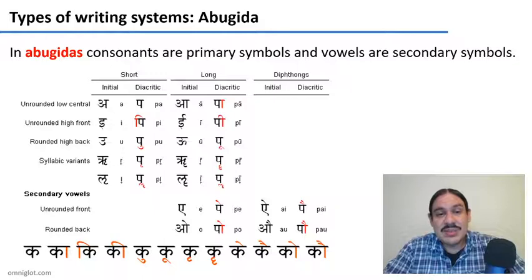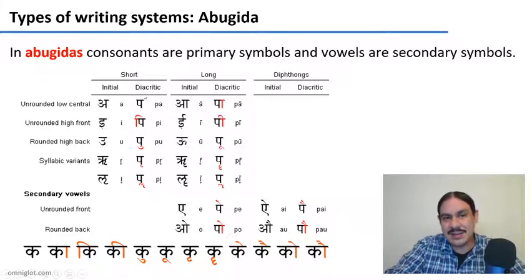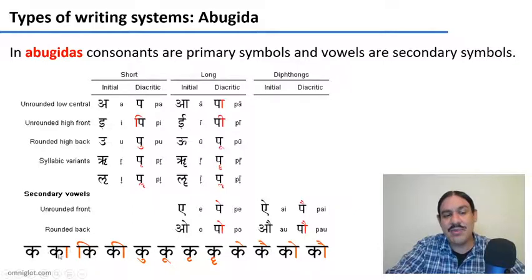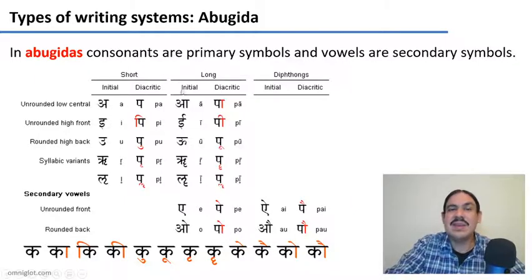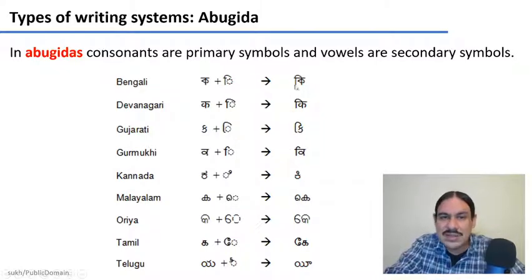Abugidas are mostly used in the writing systems of India and Southeast Asia. There, the consonant is the primary symbol — for example, 'pa' — and the vowel is a secondary attachment or diacritic. You can see that the consonant form remains constant while different diacritics are added to indicate different vowels. This is the 'k' sound across many Indian writing systems, and when you add the short 'e' diacritic you get 'ki'. The consonant is always the primary shape and the vowel is an attachment to it.